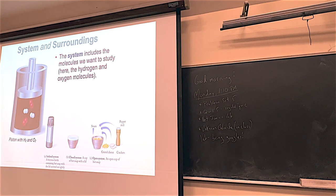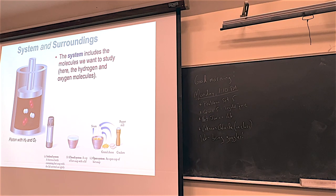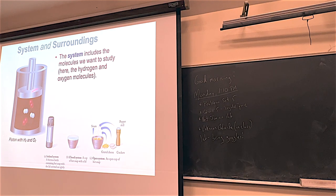There's one more concept we need to think about: system versus surroundings. The system is what you're studying - it's where the action happens. In this example, hydrogen and oxygen are inside; they're the system, and they're going to turn into water. The system is the stuff creating the change of energy - the reactants. But not necessarily the solvent, which is just getting the reactants together.